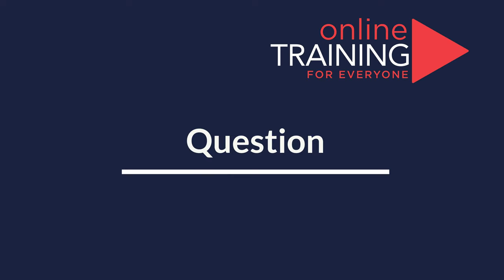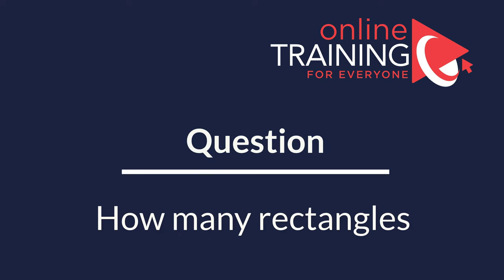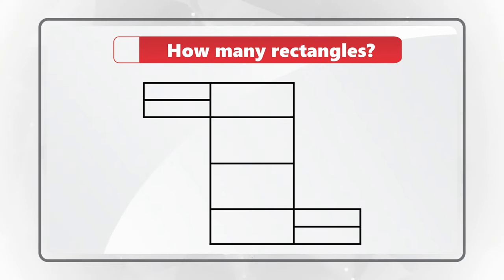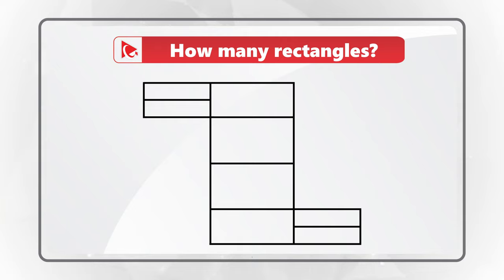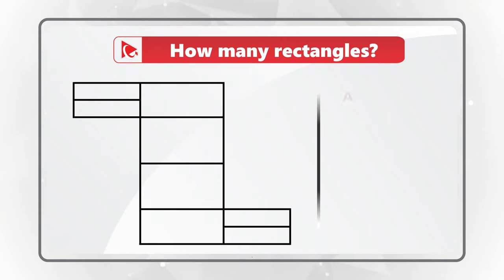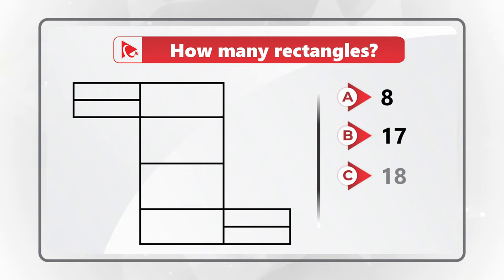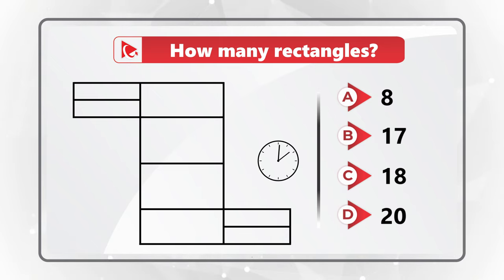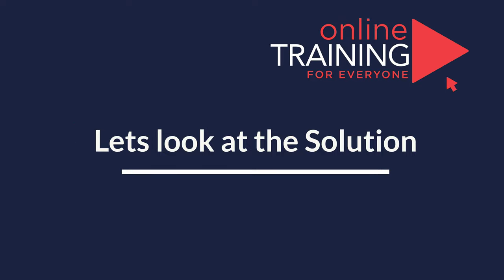Here's an amazing question to test your analytical and spatial reasoning skills. You need to determine how many rectangles are present in the picture. Take a close look at the shape and choose one of four choices: Choice A: 8, Choice B: 17, Choice C: 18, and Choice D: 20 rectangles. Give yourself a few seconds, maybe pause this video to count them all. Let's move forward and I'll share my version of the solution — if you see a different answer, please post in comments.